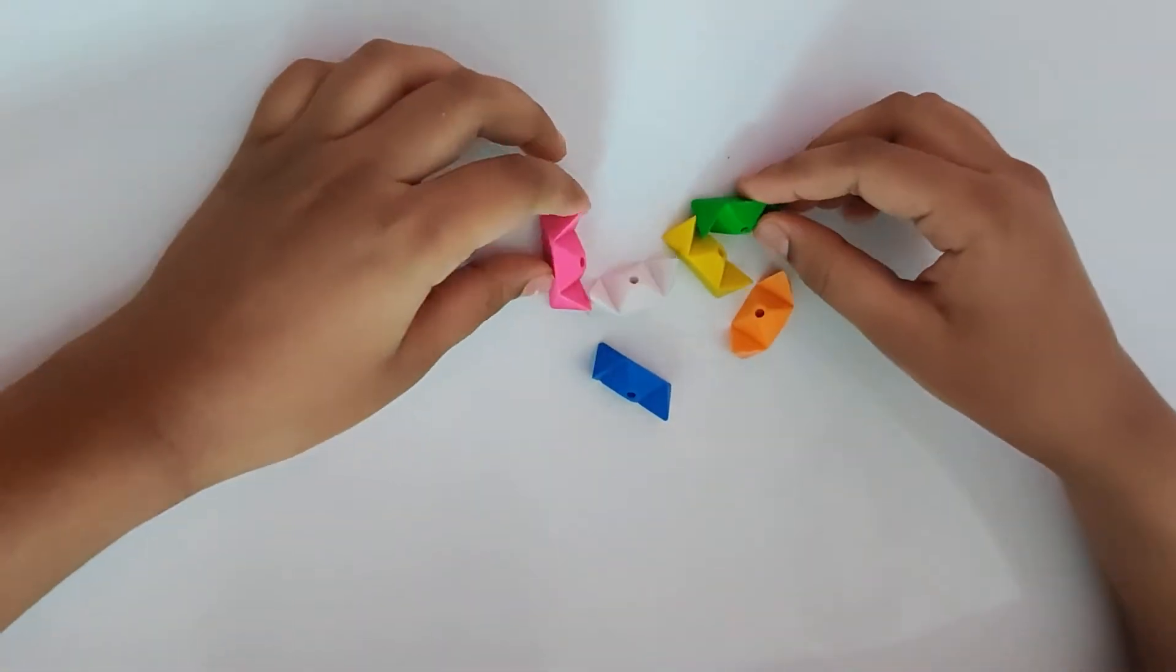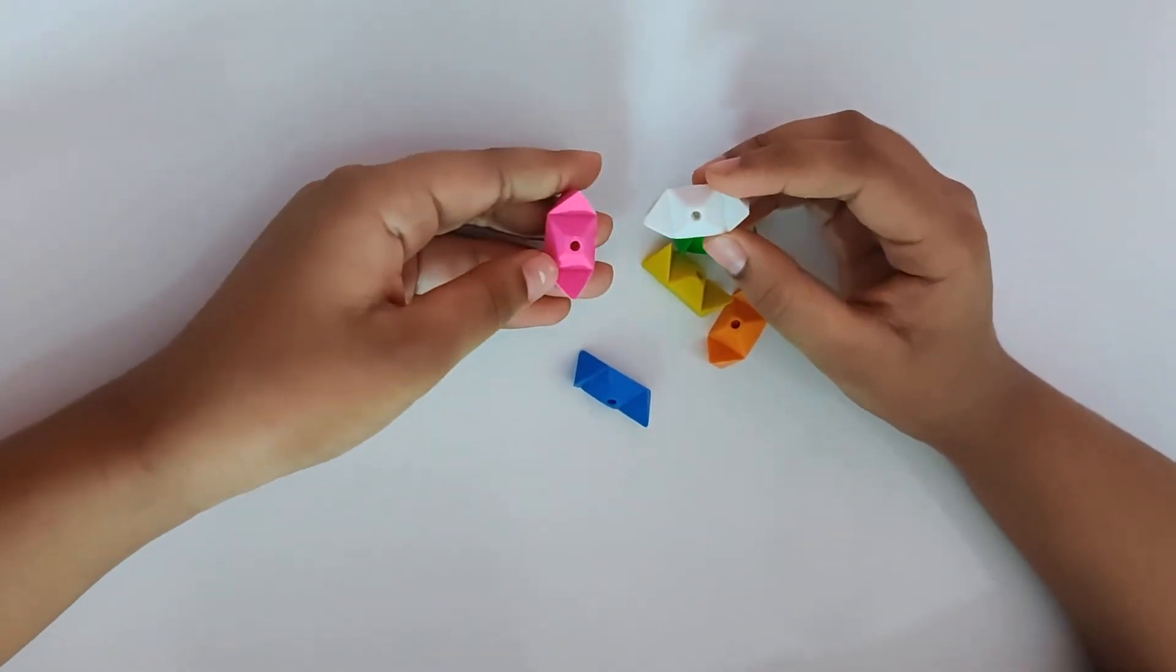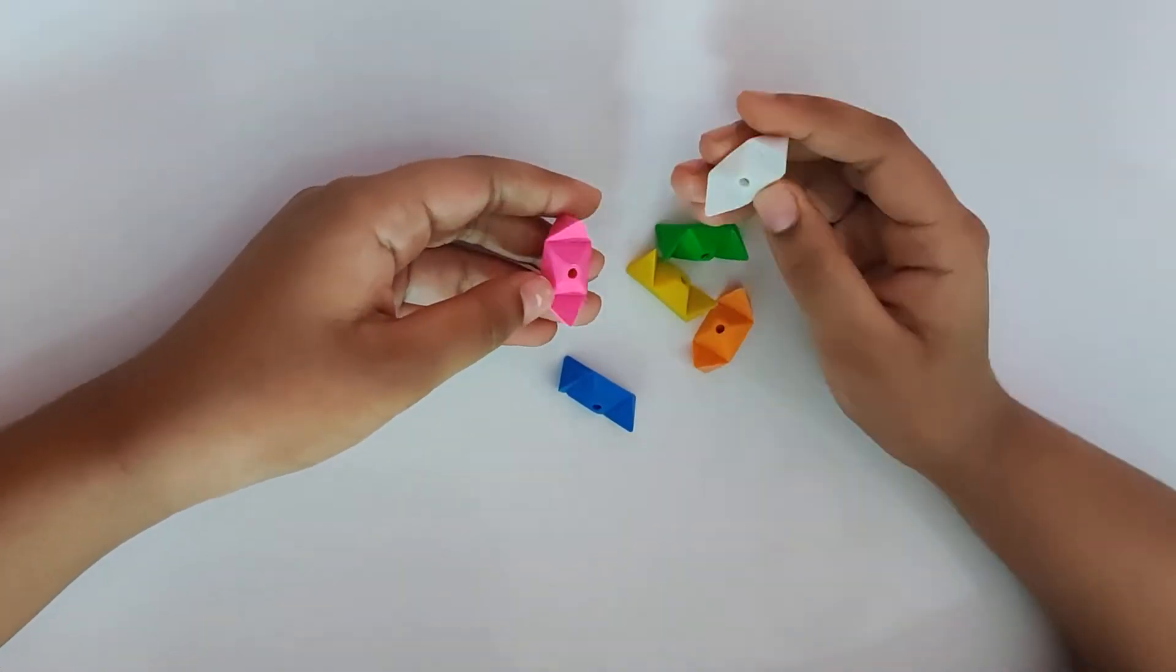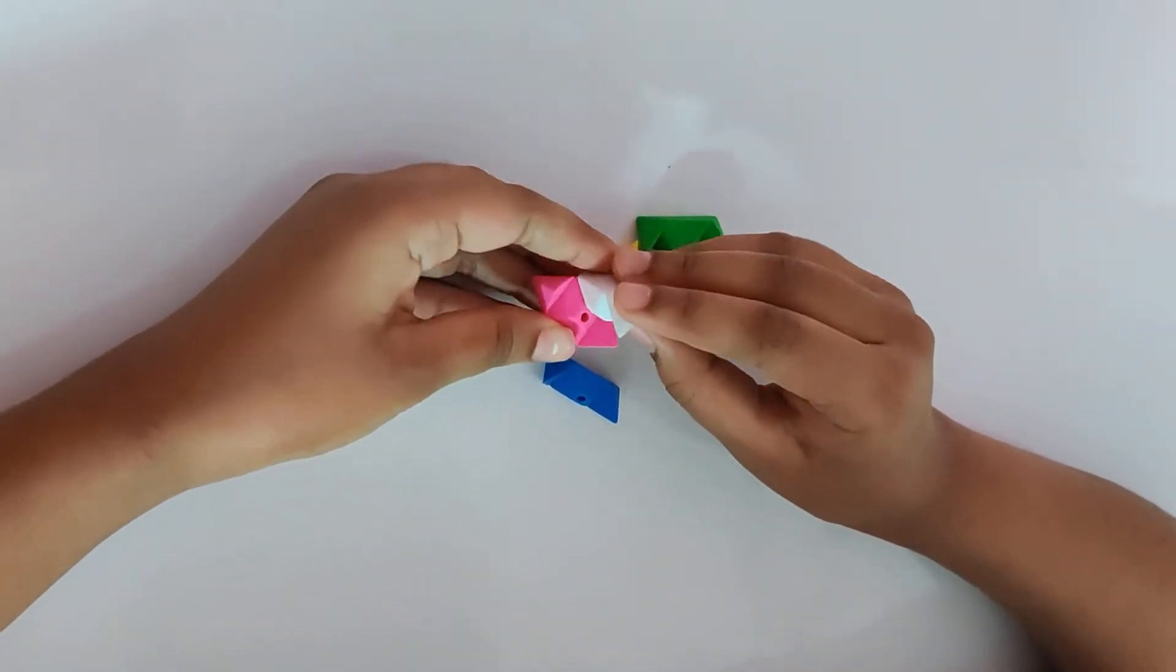This is an eraser puzzle. First, you have to take one piece and take the other piece and keep it in a vertical manner and attach it like this.